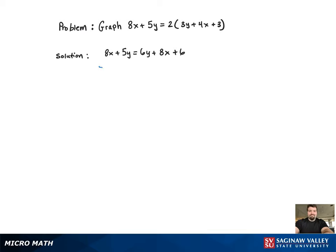Now I'm going to try to get my x's all on one side, so I'm going to subtract 8x from both sides. What happens here, though, is all the x's are gone from the equation.